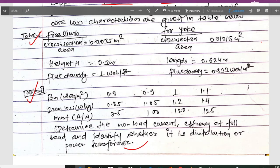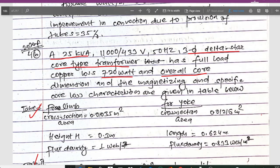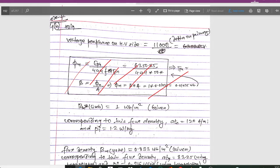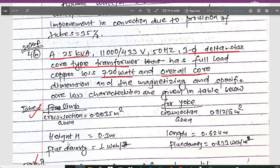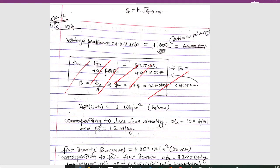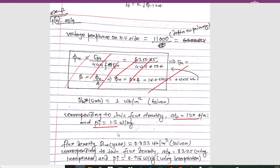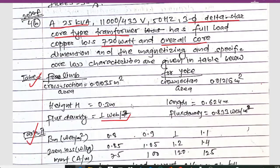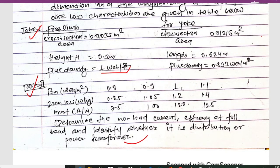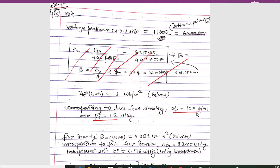Since this is a delta-star transformer, the high voltage side is 11,000 V, so the voltage per phase on the high voltage side is directly 11,000 V. Now BM is given as 1 weber per meter square for the limb. Corresponding to this flux density, ATc is given as 120 ampere per meter and Pi is given as 1.2 watt per kg, taken from Table 2.